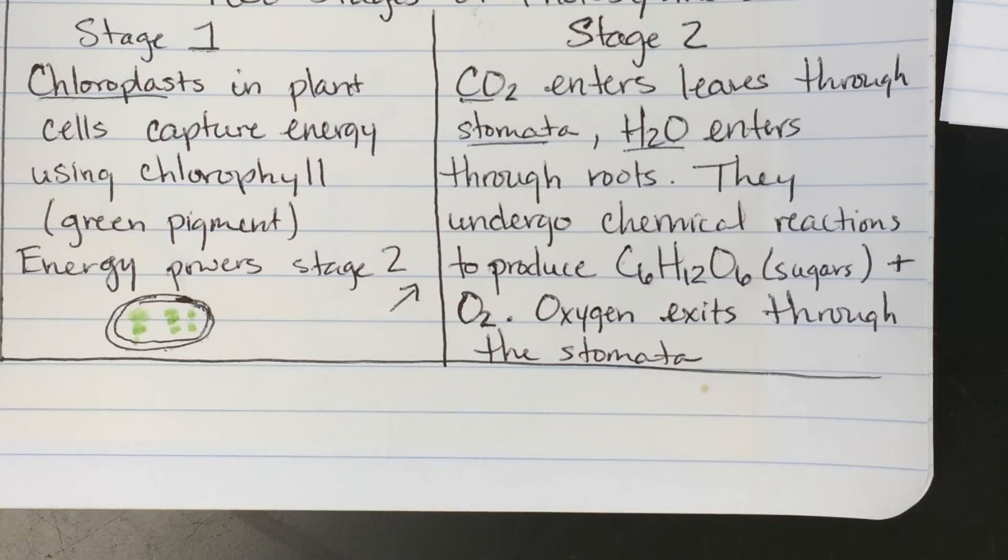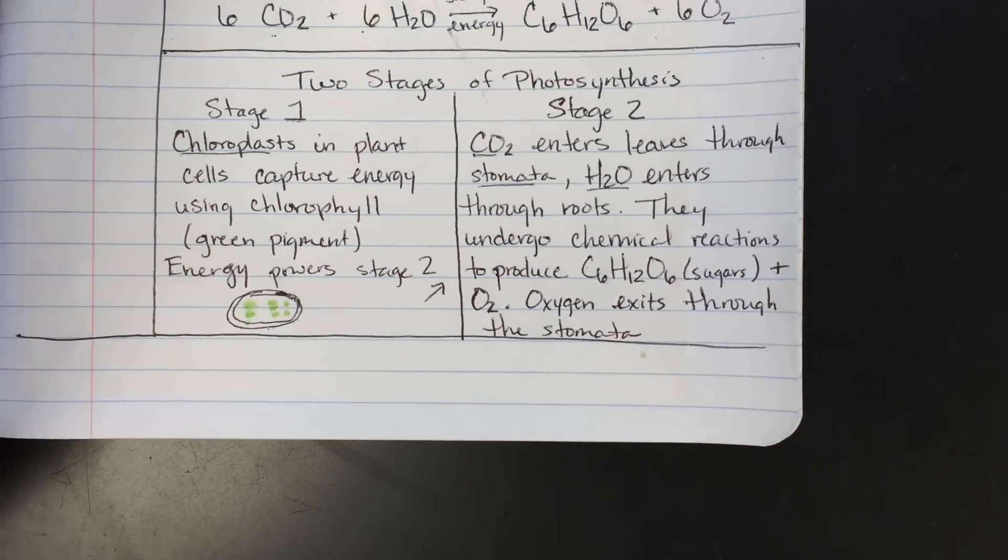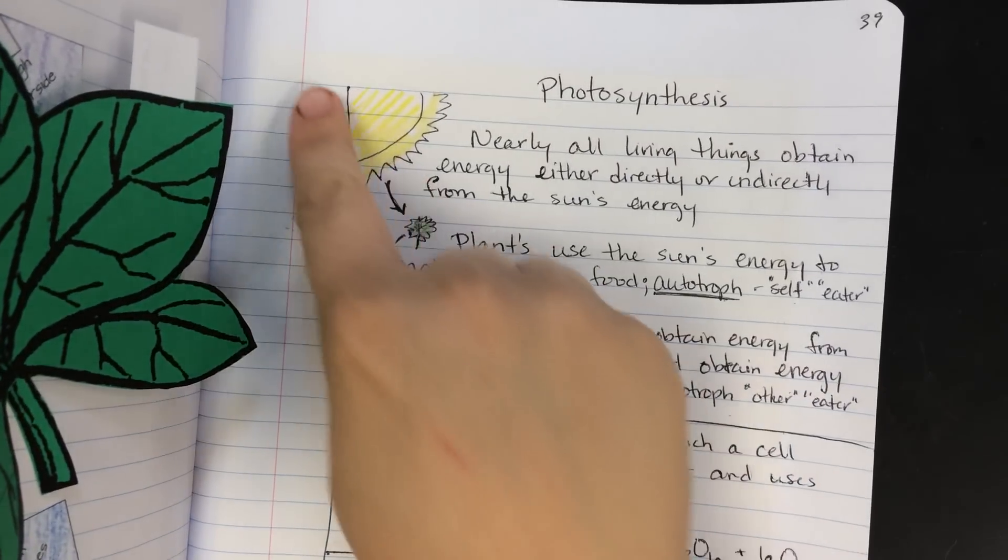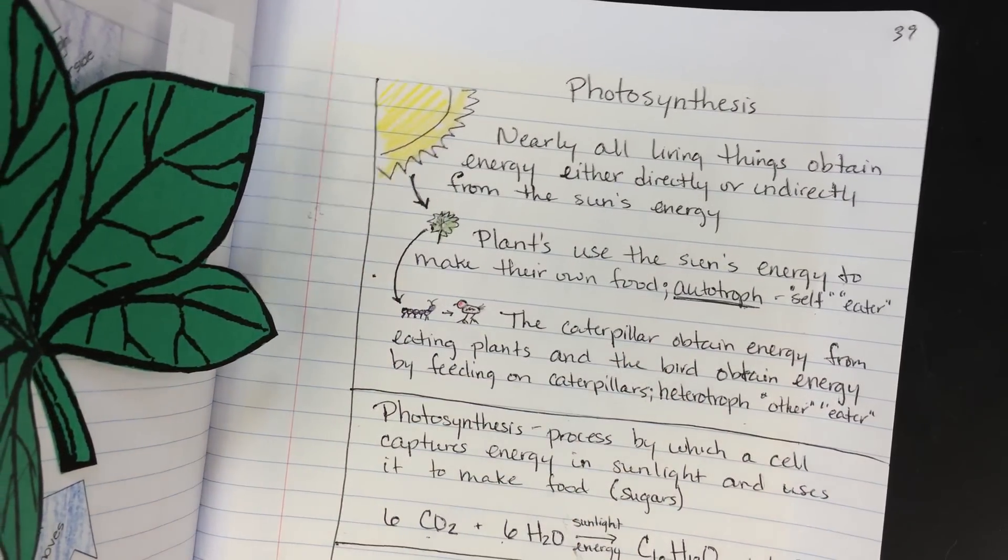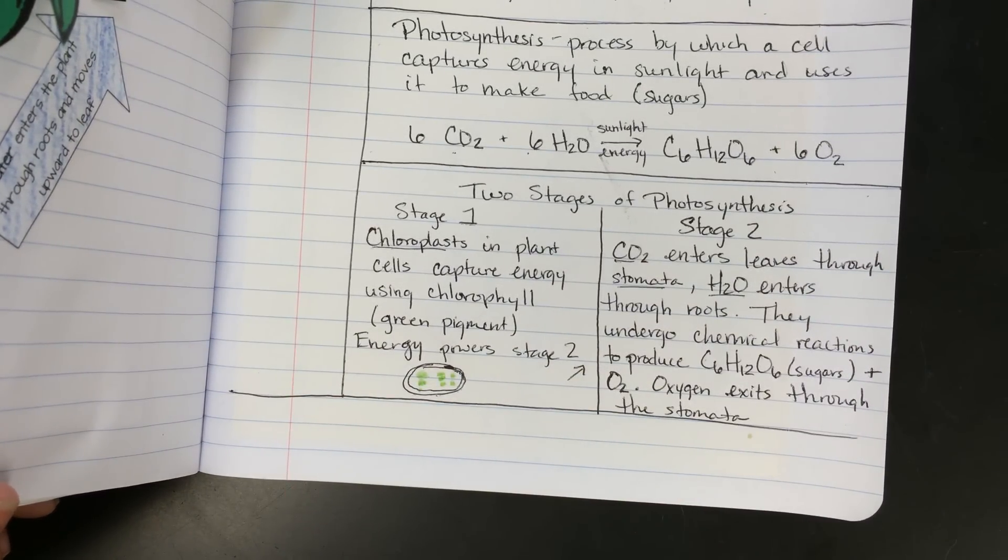And so that is kind of photosynthesis in about as much of a nutshell as I can put it. So in your notes, since you did these Cornell style, don't forget that I need you to go back in and add your questions on the left-hand column, and then your summary at the bottom, and then go running to your AVID teachers and show them how awesome and beautiful your notes are. That's it for now. Thanks!